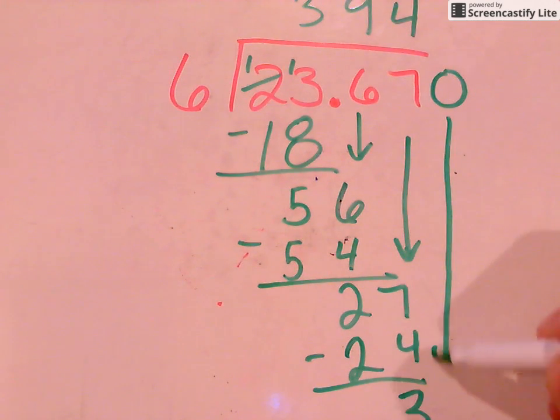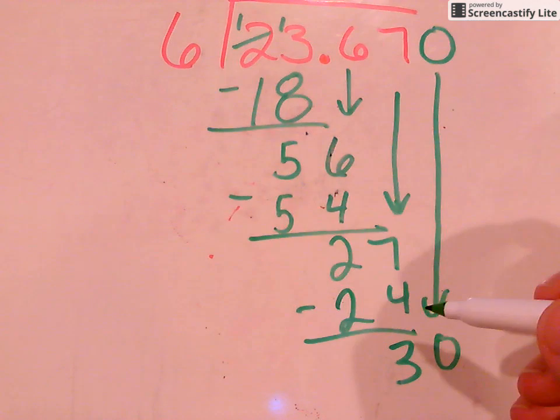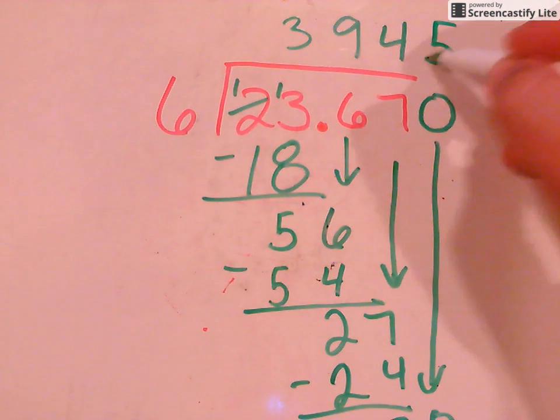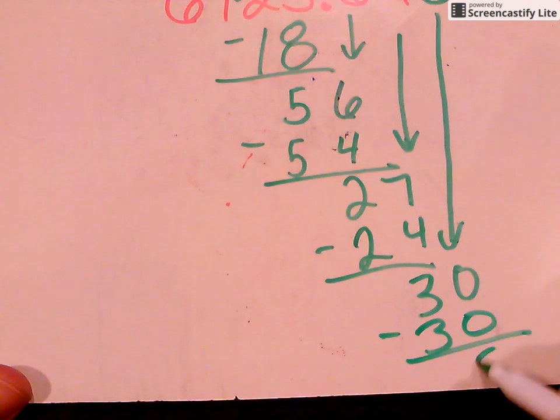So what I can do is I can bring this 0 all the way down here to where I have my 30. And I know that 6 will go into 30 five times. 6 times 5 is 30. I do my subtraction and I have 0.